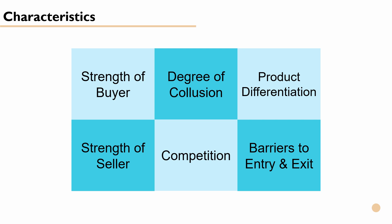Before we get into the different types of market structures, it's important to know about the characteristics we're looking out for. These include the strength of the buyer, the strength of the seller, the degree of collusion, competition, product differentiation, and barriers to entry and exit.